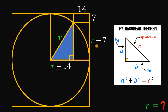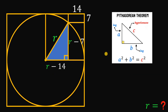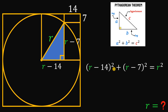This segment r minus 7 is also the side length of our right triangle. So we now have the three sides: r, r minus 7, and r minus 14. This completes the right triangle, so we can apply the Pythagorean theorem: (r minus 14)² plus (r minus 7)² equals r².